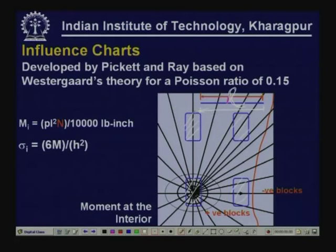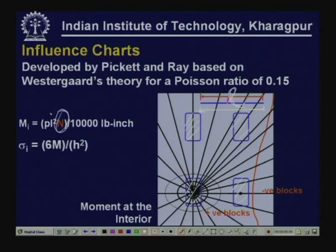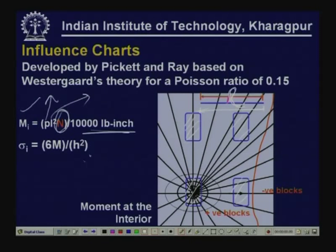Once you have identified what scale to use (so this line length corresponds to L), you count the number of blocks within all the tire imprints placed on the influence chart. The moment in the interior region is a function of contact pressure P, L (radius of relative stiffness), and N — the number of blocks occupied by all the tire imprints. Once we get the moment, we can compute the flexural stress. Depending on the position of the wheel loads, the number of blocks they occupy will also be varying.